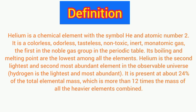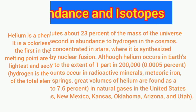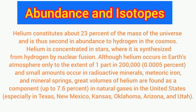Helium is the second lightest and second most abundant element in the observable universe. Hydrogen is the lightest and most abundant. Helium is present at about 24% of the total elemental mass, which is more than 12 times the mass of all the heavier elements combined.